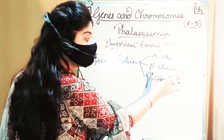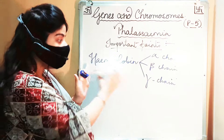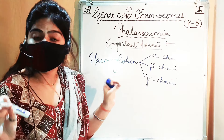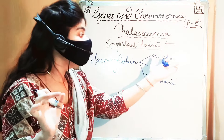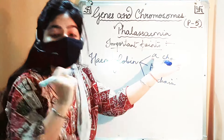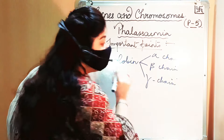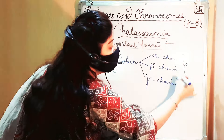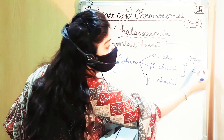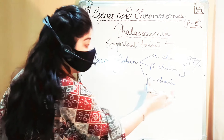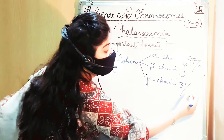Hemoglobin is made of 2 alpha chains, 2 beta chains, and 2 gamma chains. In thalassemia, the entire hemoglobin chain cannot be formed properly — either the alpha chain, beta chain, or gamma chain is affected. The beta chain makes up 97% of hemoglobin's chain composition, while the gamma chain contributes just 3%.